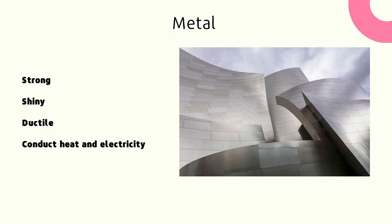Can you tell what our next material is? Metal! Metals are strong and shiny. They're also ductile, which means they can change their shape without losing strength. Metals are also good conductors of heat and electricity, so they allow heat and electricity to flow through them.